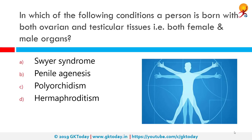In which condition is a person born with both ovarian and testicular tissues, meaning both female and male organs? The correct answer is hermaphroditism. In biology, a hermaphrodite is an organism that has complete or partial reproductive organs and produces gametes associated with both male and female sexes. In true hermaphroditism, an individual has both ovarian and testicular tissues.